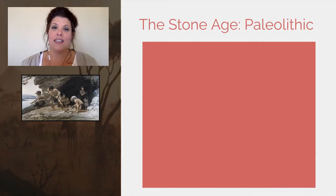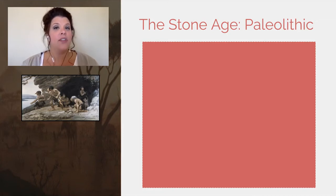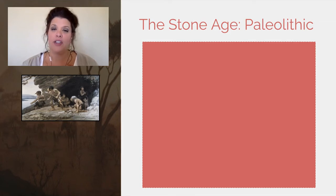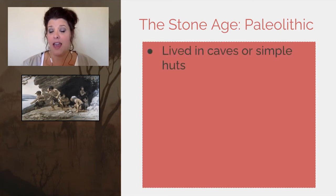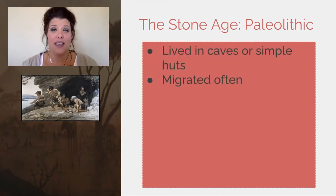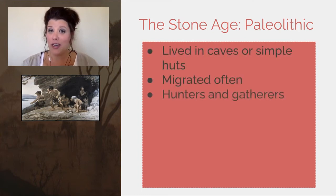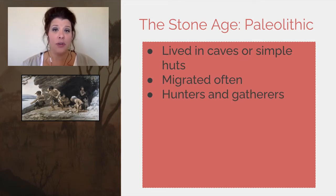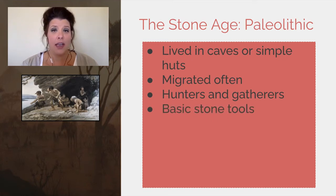The first era on this timeline is the Stone Age, which is divided into three different categories. The first part of the Stone Age is the Paleolithic era. During the Paleolithic era, people lived in caves or simple huts. They migrated really often to follow the herds and their sources of food, which means that they became really good at hunting and gathering.